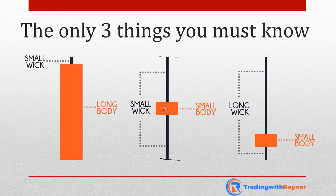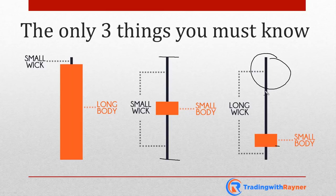Even though it's an indecision candle, I would say the sellers have a slight edge because they managed to close the price slightly lower. The third candle is more bearish — it has a body with a lower close, and a long wick that has rejected higher prices, with the wick length much longer than the body, finally closing near the lows.